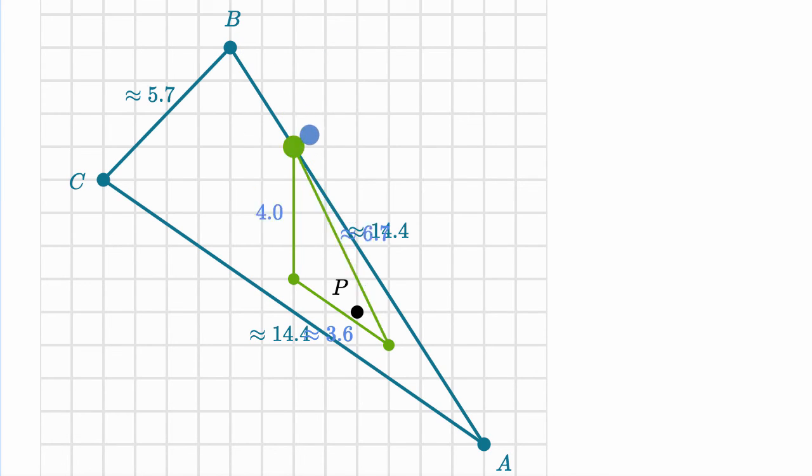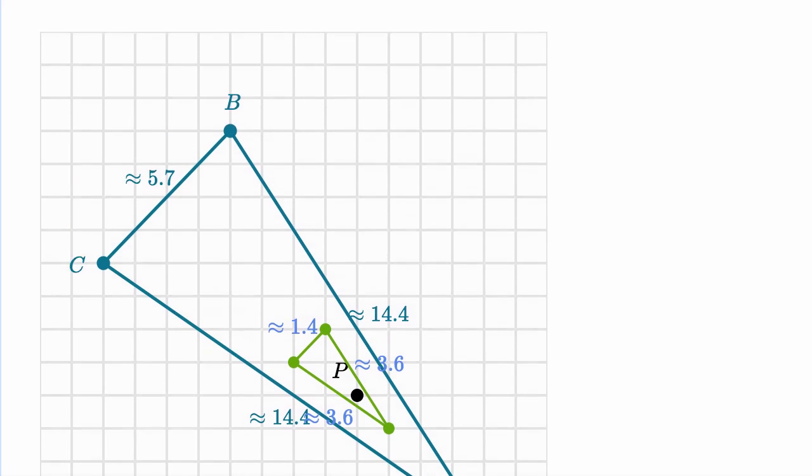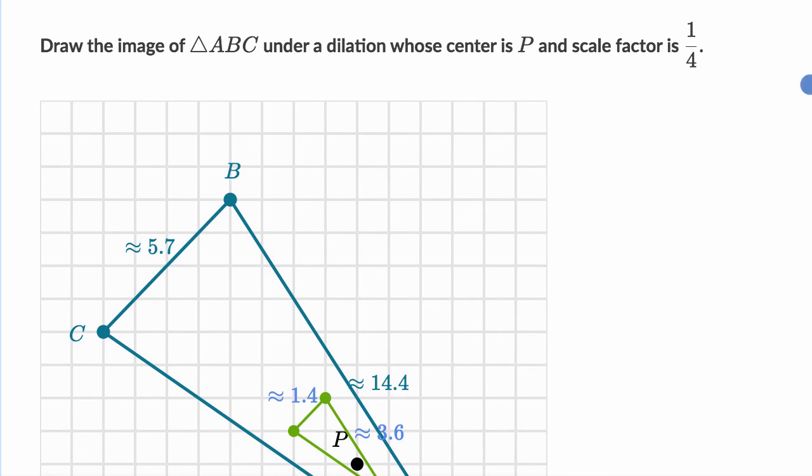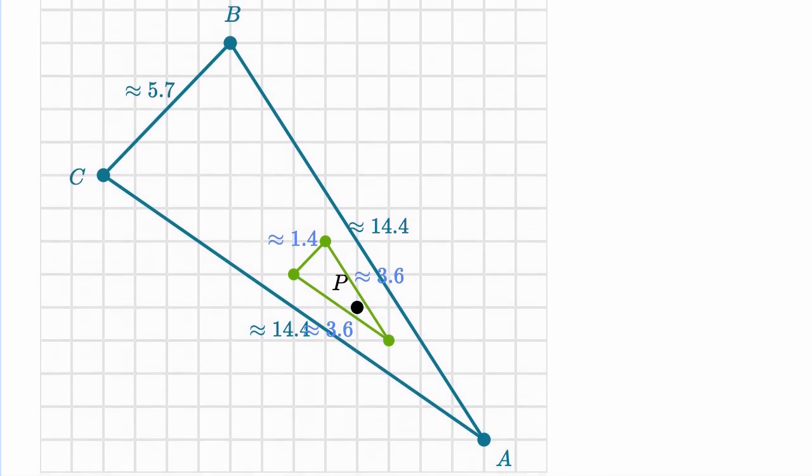So if we have a scale factor of 1/4th, instead of going 8 up, we'll go 2 up, and instead of going 4 to the left, we will go 1 to the left. So there you have it. We have just dilated triangle ABC around point P with a scale factor of 1/4th, and we are done.